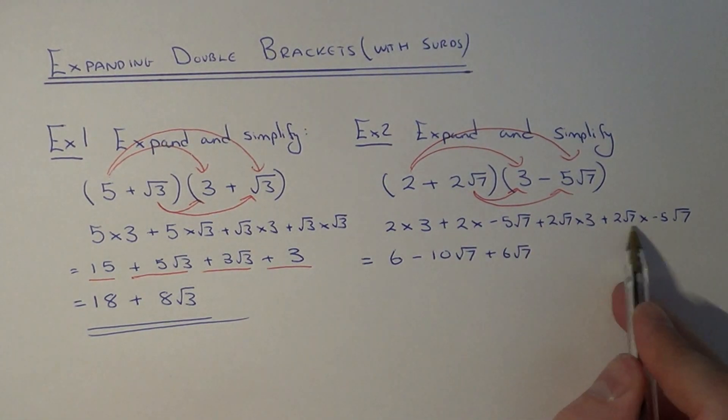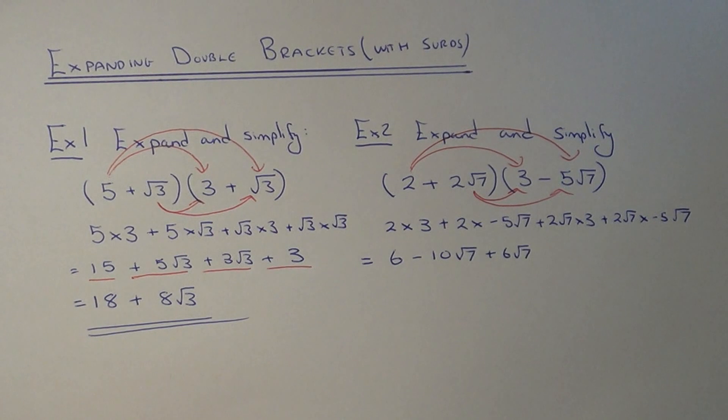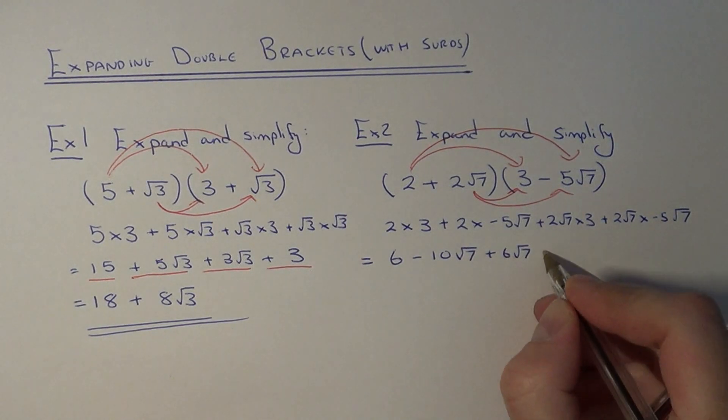And the last term is going to be a little bit tricky. If we multiply our whole numbers, 2 times minus 5 is minus 10. Root 7 times root 7 is 7. So that would be minus 10 times 7 which is minus 70.